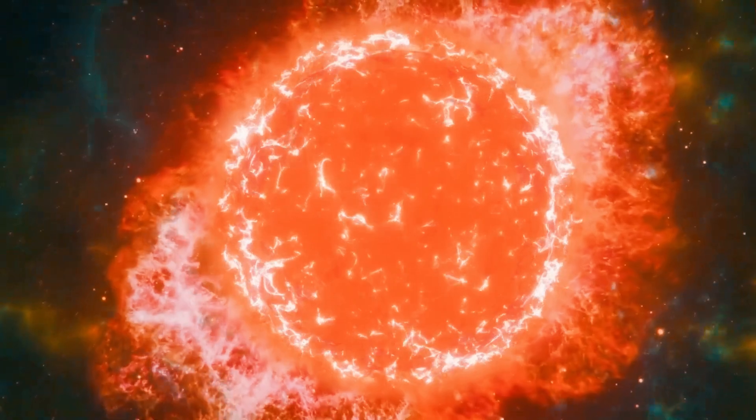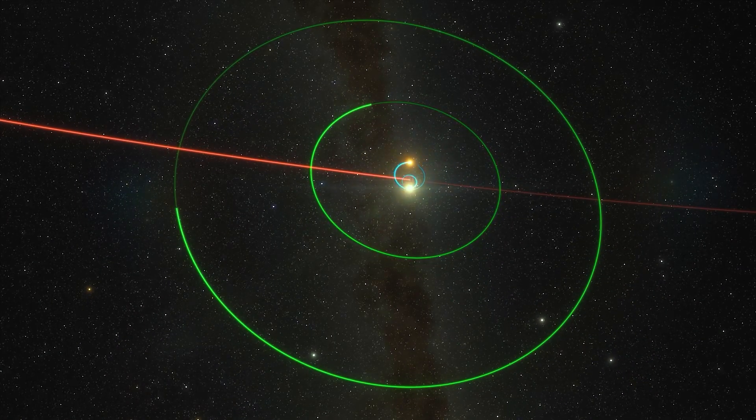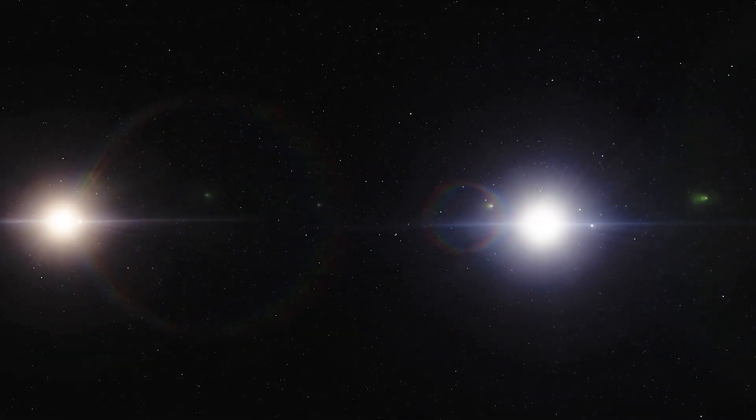The host star TOI-1452 is much smaller than our Sun and is one of two stars of similar size in the binary system. The two stars orbit each other and are separated by such a small distance, 97 astronomical units, or about 2.5 times the distance between the Sun and Pluto.